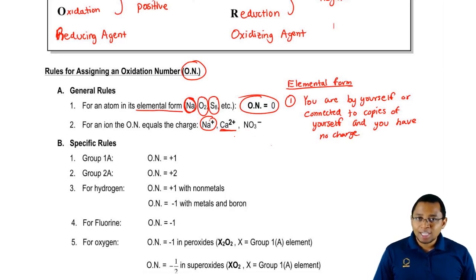Now NO3 minus, that's our nitrate ion, our polyatomic ion. The oxidation number for the entire compound is negative one. Now if we want to find the oxidation state of each of the individual elements, that's when we move on to our specific rules.